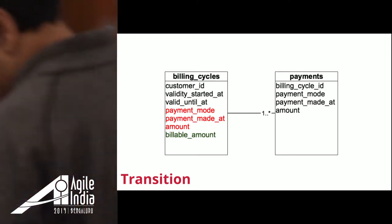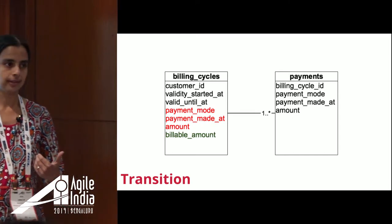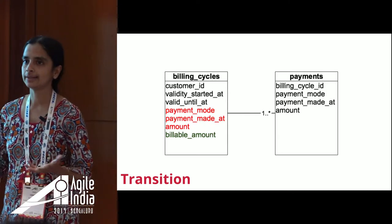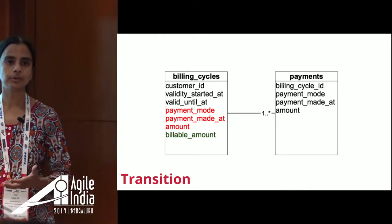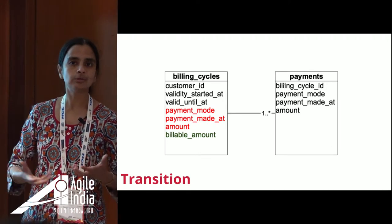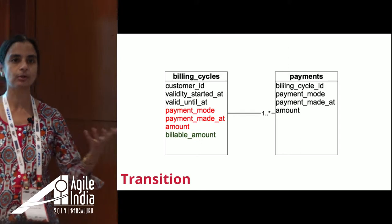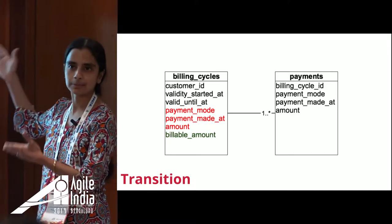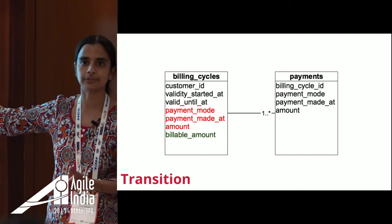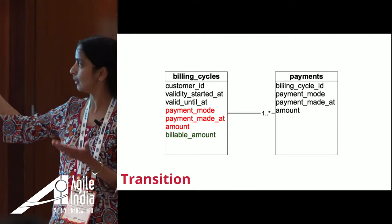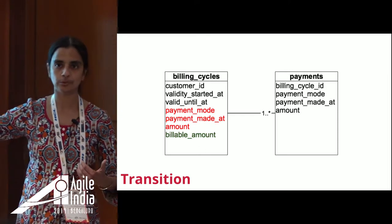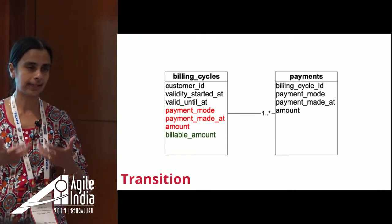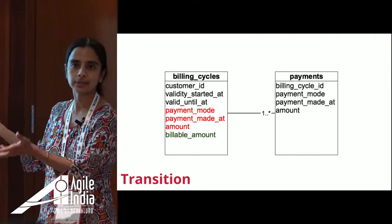This is what the new structure should look like — a one-to-many relation between cycles and payments, so we can record how many payments happened for a particular cycle and find the balance. To do this in a continuous delivery fashion, we introduce the payments table but don't delete the existing fields. We copy the data — when we add a cycle, we store that data into the payments table also, using a database trigger or ORM callbacks. The technique doesn't matter much; the idea is that you have parallel implementation.